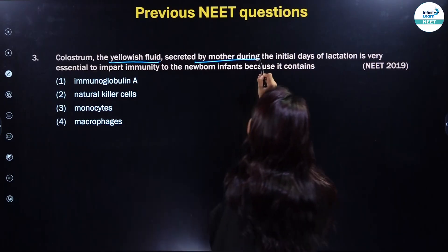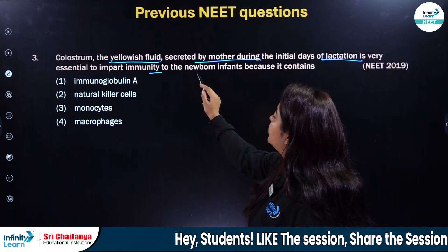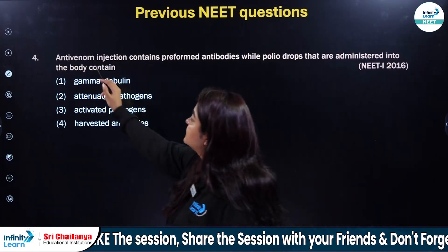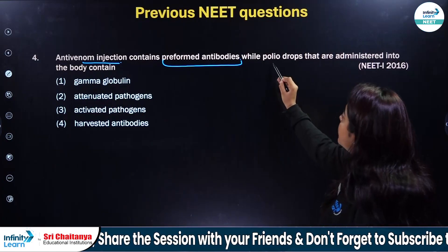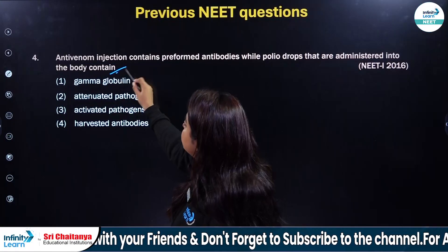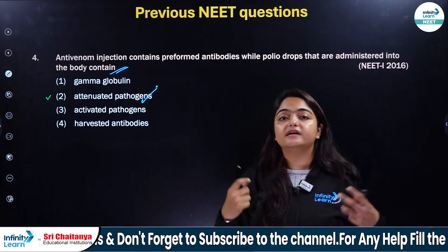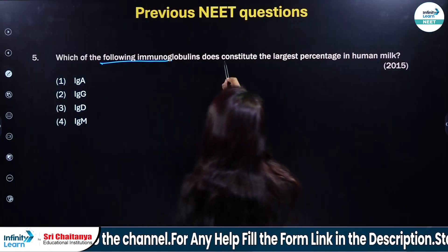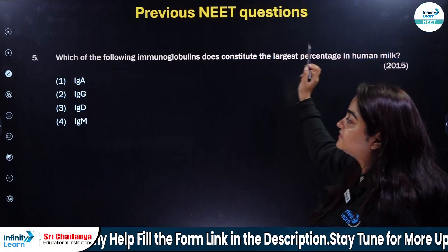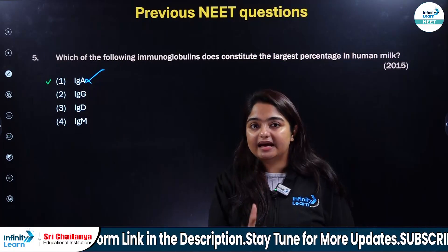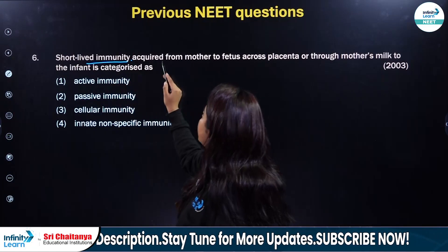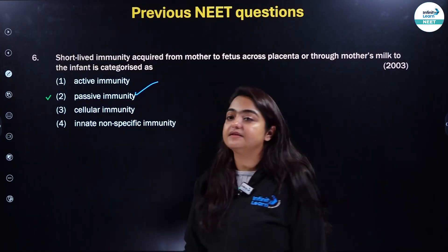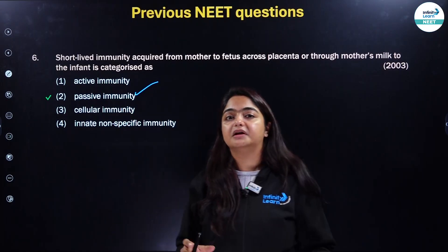Colostrum, the yellowish fluid secreted by the mother during the initial days of lactation, is very essential to impart immunity to newborn infants because it contains IgA — immunoglobulin A. Anti-venom injection contains preformed antibodies, while polio drops administered into the body contain attenuated pathogens, which means they are not completely active — they are weakened ones. The immunoglobulin that constitutes the largest percentage in human milk is IgA. Short-lived immunity acquired from mother to fetus across the placenta or through mother's milk to the infant is categorized as passive immunity, because preformed antibodies are being transferred from the mother to the infant.